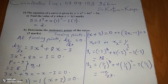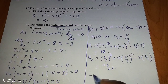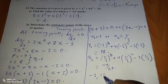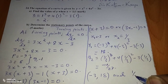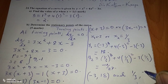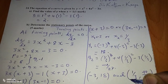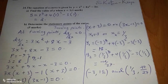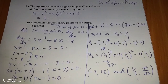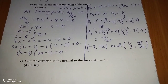So the coordinates of the stationary points are negative 3, 18 and one-third, negative 14 over 27. These are the points where the gradient function becomes 0, and that is the solution to part (b).